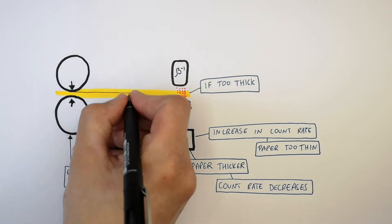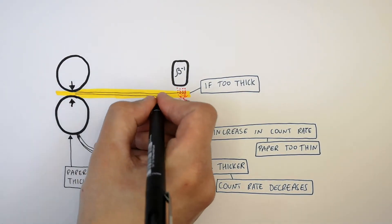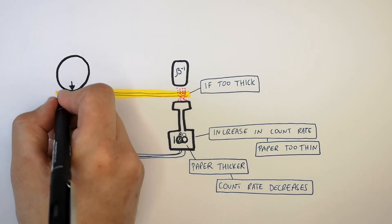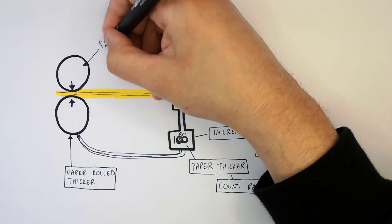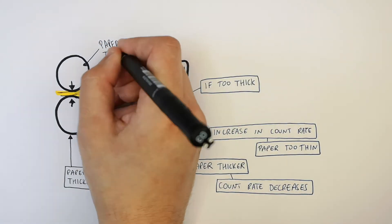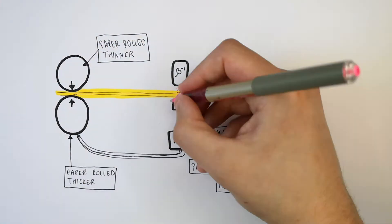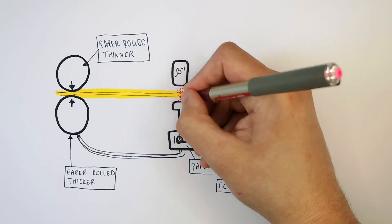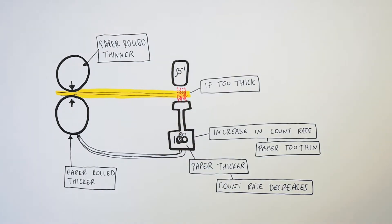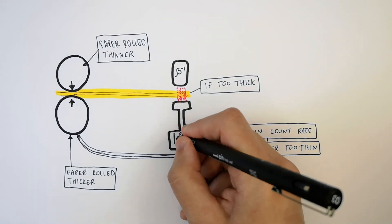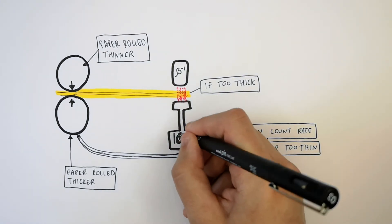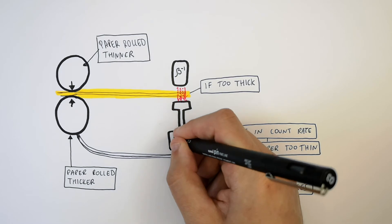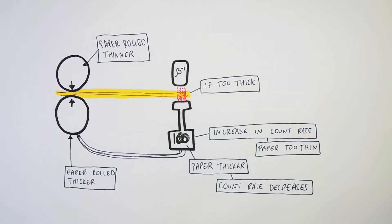The rollers cause the paper to be rolled thinner. Now the paper is rolled thinner, more beta particles are able to penetrate the paper, meaning the count rate increases back up to 100 and the rollers stay at that setting.